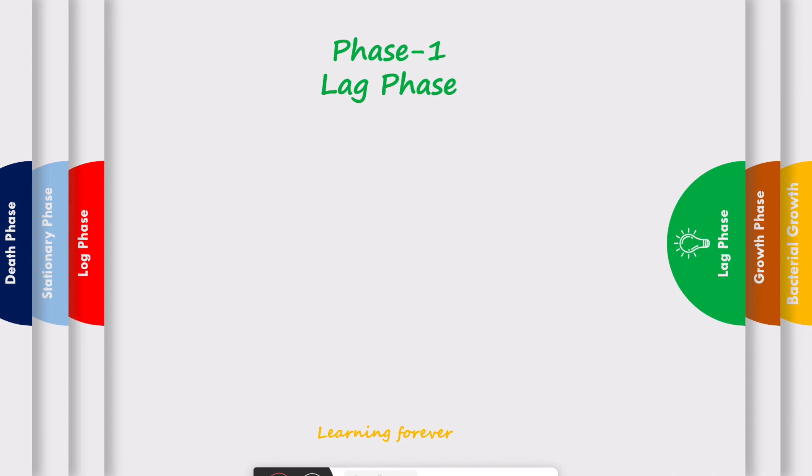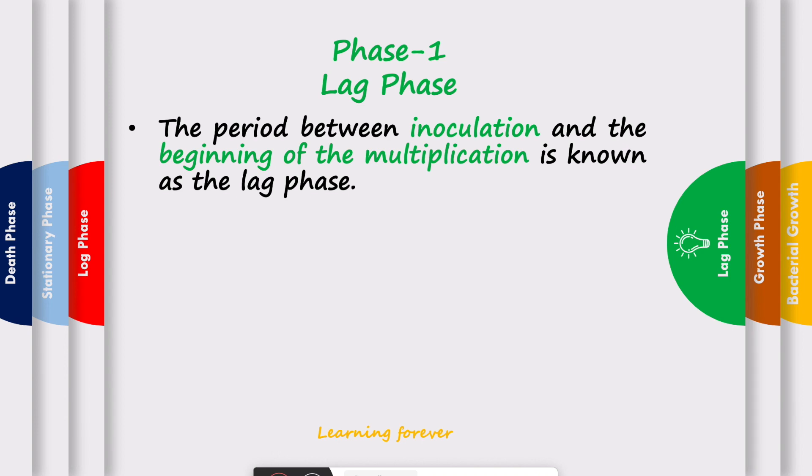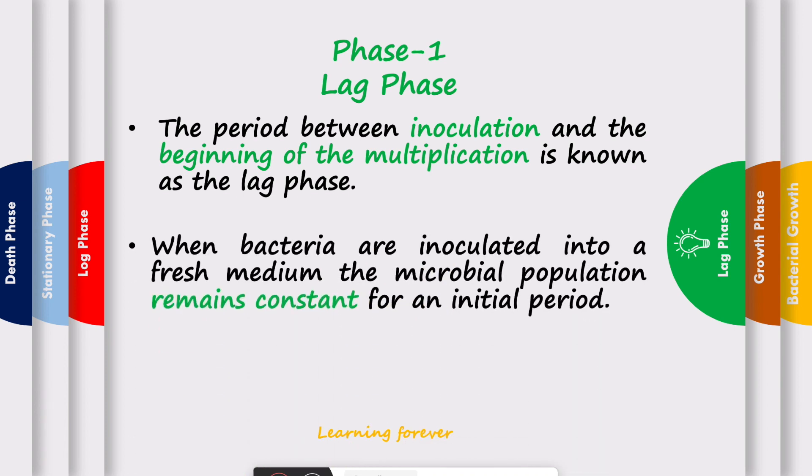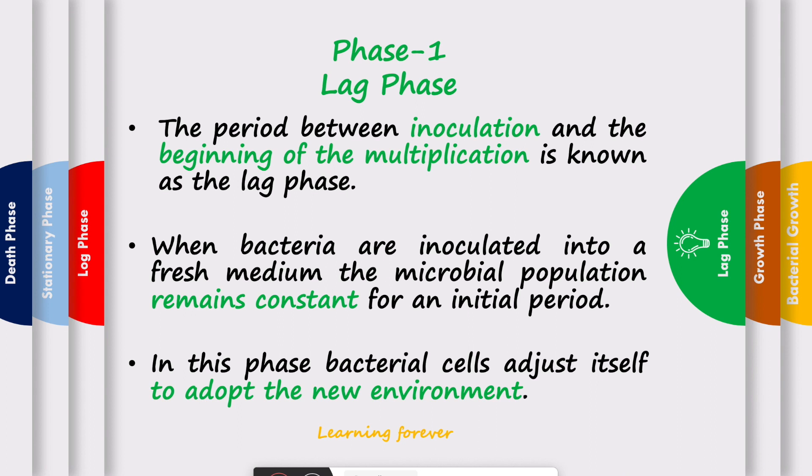Let's study each and every phase of bacterial growth in detail. Phase one is the lag phase. The period between inoculation and the beginning of multiplication is known as the lag phase. When bacteria are inoculated into a fresh medium, the microbial population remains constant for an initial period. In this phase, bacteria cells adjust themselves to adopt the new environment. For example, if we have inoculated 50 bacteria in a petri plate, then for an initial period, this number remains constant and there is no increase in cell number, hence it is called lag phase.